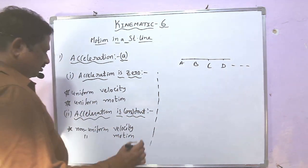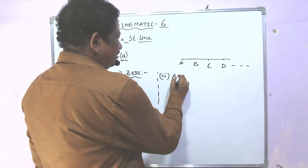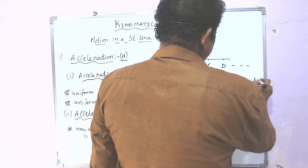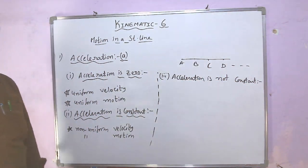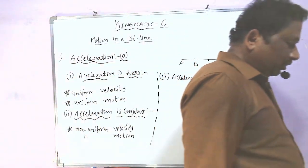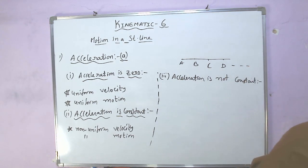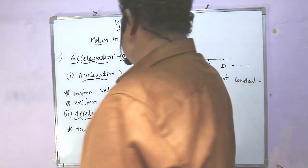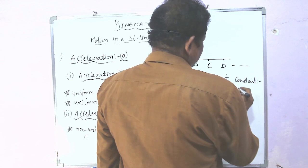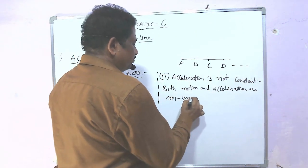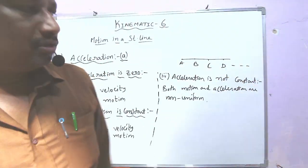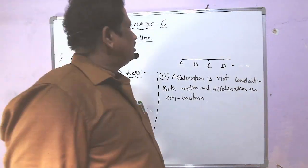Third condition: acceleration is not constant. This occurs when the body is in non-uniform motion and the acceleration is also non-uniform. When both motion and acceleration are non-uniform, you get acceleration that is not constant. These three conditions are applicable for upcoming problems.